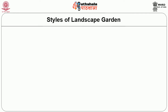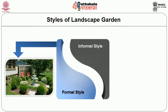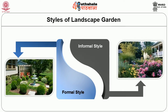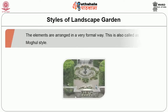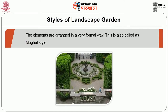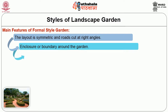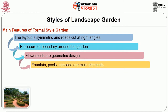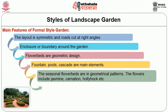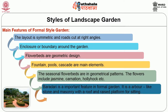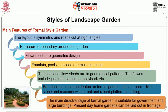We will see about the styles of landscape garden. Basically there are two styles: one is formal style, and the second one is informal style. The formal style of garden — the elements are arranged in a very formal way. This is also called as Mughal style. Formal garden has perfect symmetry in the designs. The main features of the formal garden are the layout of symmetry and roads cut at right angles, enclosures or boundary around the garden, flower beds in geometric design, fountains, pools, cascades as main elements, and seasonal flower beds in geometrical patterns. The flowers include jasmine, carnation, hollyhocks etc. Pardari is an important feature in formal garden — it is an arbor-like stone and masonry structure with a roof and raised platform for sitting. These gardens are created around tombs or mosques. The main disadvantage of formal garden is it is only suitable for government and large buildings.